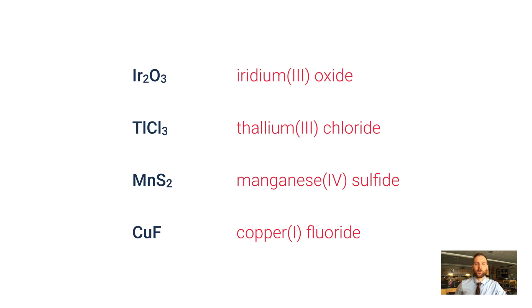Starting to get the hang of it? Try some on your own. Pause the video, don't forget to use Roman numerals. The first one is iridium(III) oxide. We've got thallium(III) chloride, manganese(IV) sulfide—if you went with manganese(II) sulfide because you're trying to reverse the crisscross method, that's a good thought, but sulfide has a minus 2 charge, so if there's two of those, manganese has to be plus 4—and finally copper(I) fluoride.